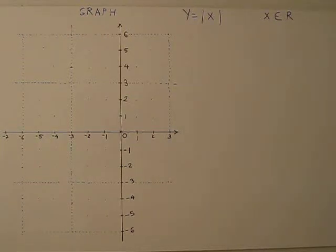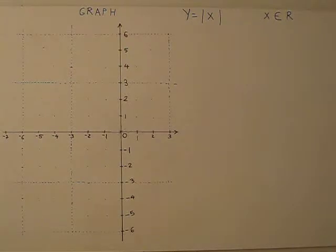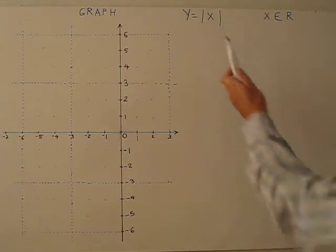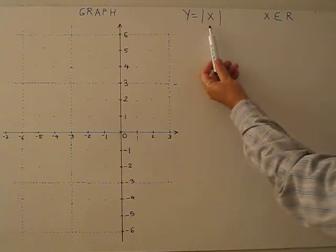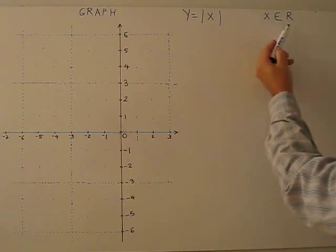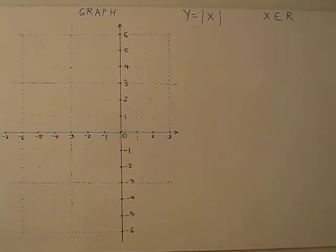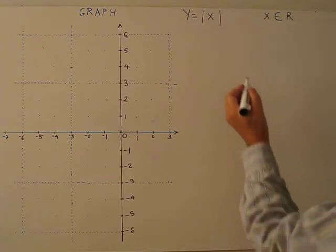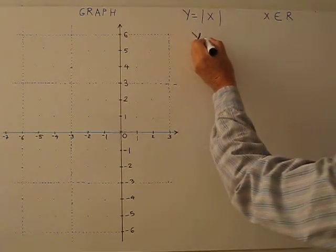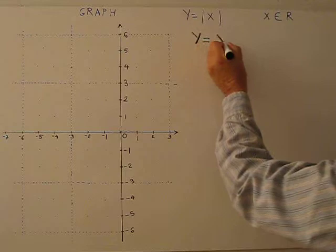I am going to talk about graphing absolute value functions. First, let's start with a basic example: Y equals absolute value of X, where X is all real values. To graph this function, we first graph Y equals X.